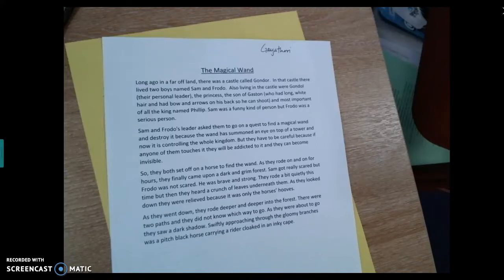The Magical Wand. Long ago in a far off land, there was a castle called Gondor. In that castle there lived two boys named Sam and Frodo. Also living in the castle were Gondor, their personal leader, the princess, the son of Gaston, who had long white hair and had bow and arrows on his back so he can shoot. And most important of all, the king named Philip. Sam was a funny kind of person, but Frodo was a serious person. Sam and Frodo's leader asked them to go on a quest to find a magical wand and destroy it because the wand has summoned an eye on top of a tower and now it is controlling the whole kingdom. But they have to be careful because if any of them touches it, they will be addicted to it and they can become invisible.